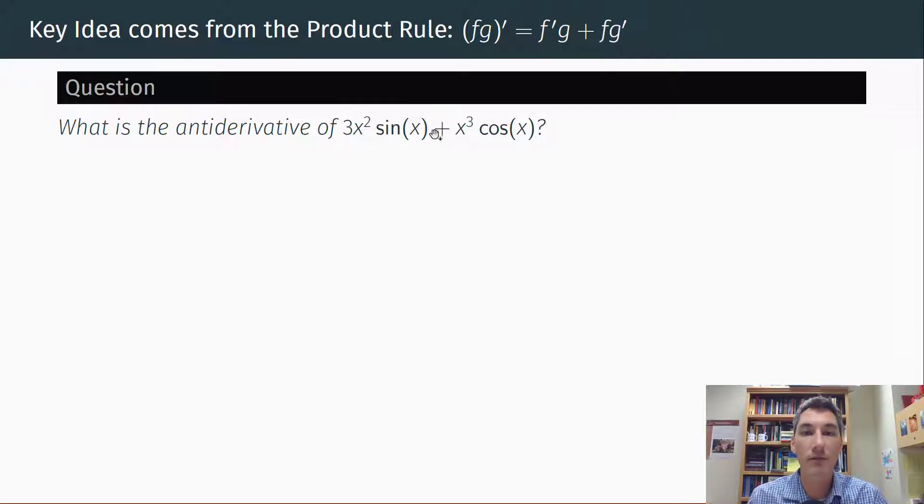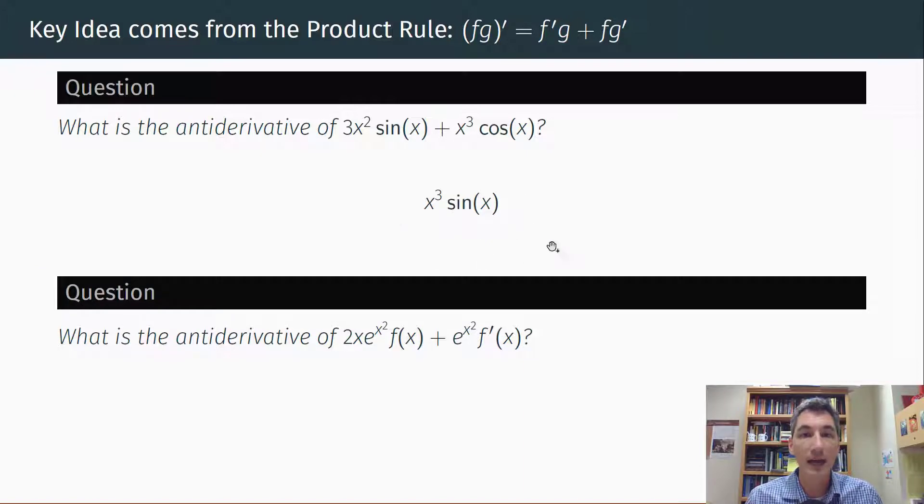So what would be the antiderivative of, say, 3x² sin(x) plus x³ cos(x)? Well, if we recognize that this thing is, 3x² is the derivative of x³. So this is like f and f'. And cosine is the derivative of sine. So this is like g and g'. So the antiderivative of f'g plus fg' should just be fg, which should be x³ sin(x). So that is the antiderivative of this sum right here. Look at it. What's the derivative of x³ sin(x)? Well, it would be 3x² sin(x) plus x³ cos(x).